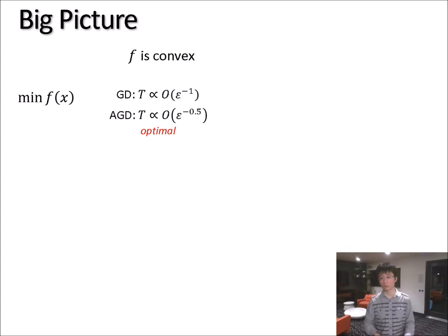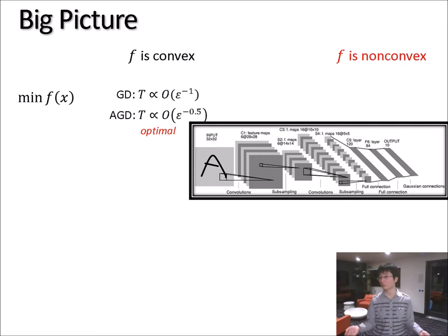But if you think about it, nowadays in machine learning, many of the functions we want to minimize turn out to be non-convex. And even worse, many of them turn out to be stochastic. For instance, when training a neural network with respect to training samples, the loss function you care about is the average loss with respect to all the inputs.